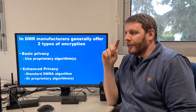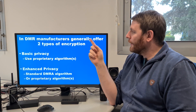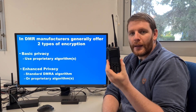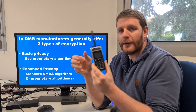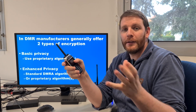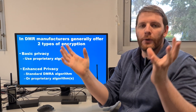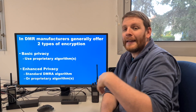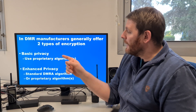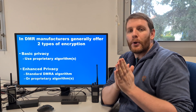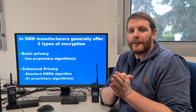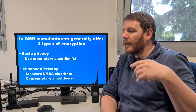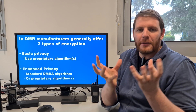In DMR, manufacturers generally offer two types of encryption. When you take a Motorola radio, an iTera radio, a TYT radio, an Anytone radio, generally there are two types of privacy: the basic privacy and the enhanced privacy. Basic privacy generally uses proprietary algorithms, like LFSR — Linear Feedback Shift Register — or exclusive-OR specific algorithms.